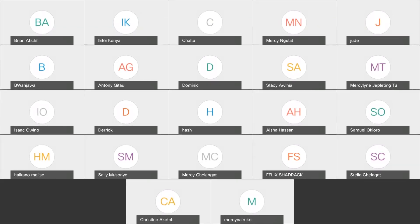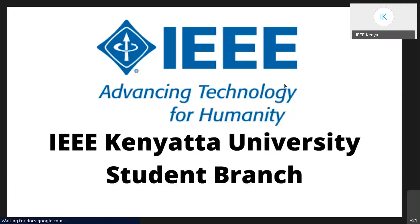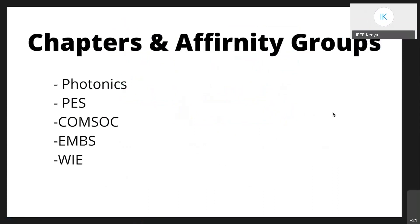I'd like to mention one or two things before I hand it back to Aisha. Currently in KU, we have five chapters. We have the photonics chapter, the Power and Energy Society chapter, the Comsoc Society, also Engineering and Medicine — EMBS, Engineering Medicine and Biology Society — and the Affinity Group WIE. All these are societies under IEEE-KU, hosting events and providing up-to-date content and workshops.